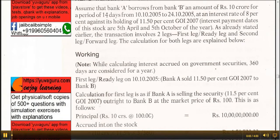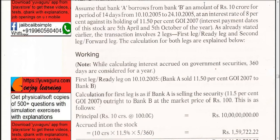Let's solve a problem on repo transactions forward leg. Bank A borrows from Bank B an amount of 10 crores for a period of 14 days, from 10.10.2005 to 24.10. The loan interest rate is 8%, which is the market rate. The security A is giving is 11.5% Government of India securities, with interest dates on 5th April and 5th October. We have to calculate the ready leg and forward leg prices.